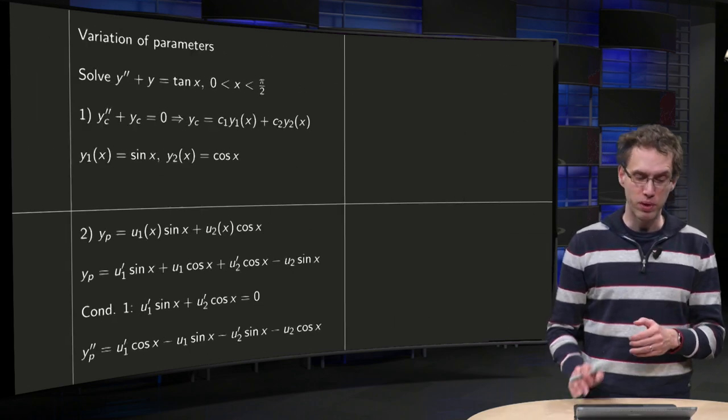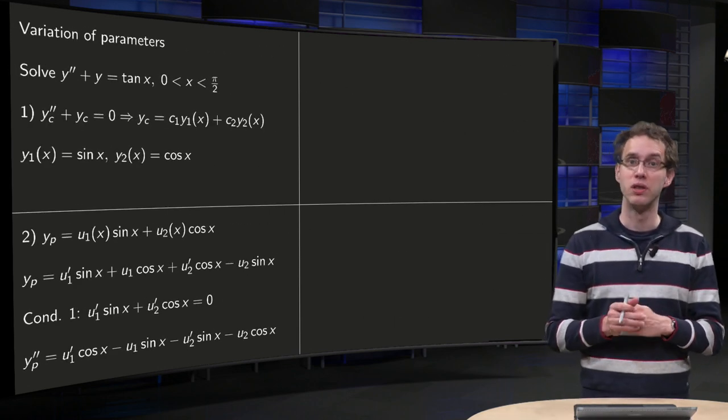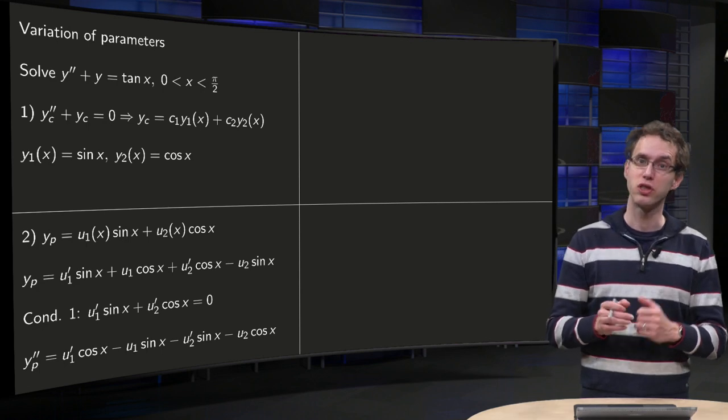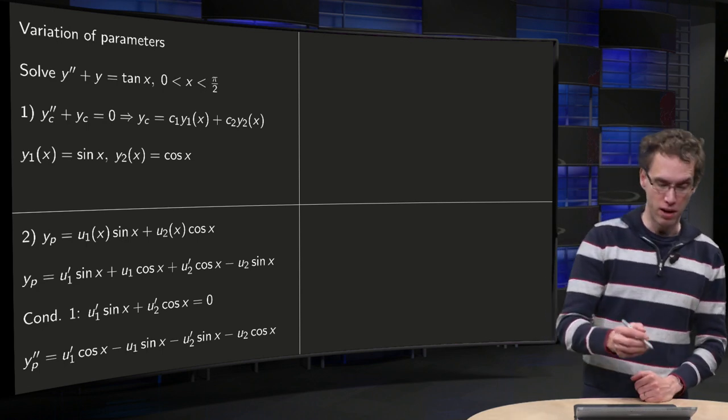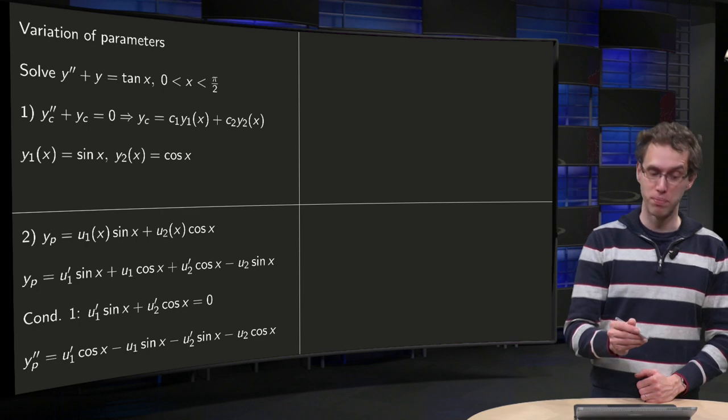But then we want to find a particular solution. Well, we cannot use the method of undetermined coefficients, so let's try the method of variation of parameters.